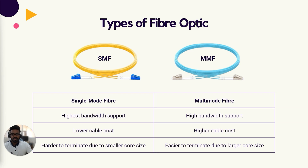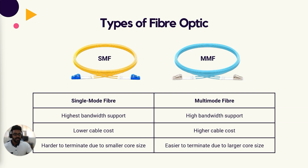Fiber optic cabling comes in two different types. The first is single mode fiber, or SMF. Single mode fiber cables transfer data using a single light ray. The internal core is very small — about 10 microns in diameter — which prevents the light from bouncing around too much, allowing for very long cable lengths and high data transfer rates.